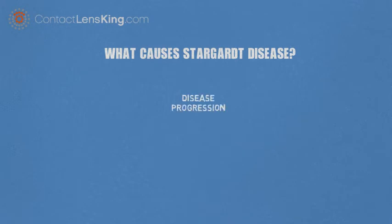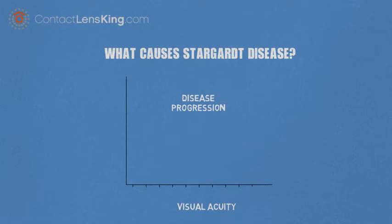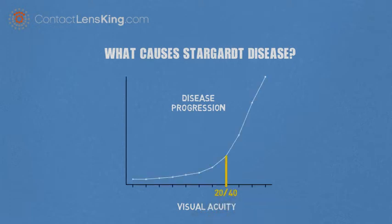Stargardt Disease, or juvenile macular degeneration, initially progresses slowly, but the rate of deterioration increases when visual acuity reaches twenty-fortieths.